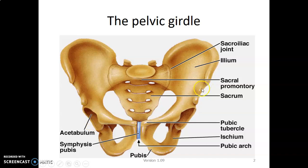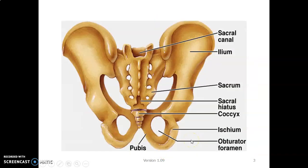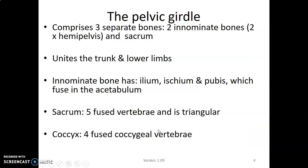Key landmarks include the anterior superior iliac spine, anterior inferior iliac spine, the superior pubic ramus with the pubic tubercle, the pubic symphysis, and the inferior pubic ramus. Posteriorly is the ischium and the sacrum, including the sacral hiatus, sacral foramina, and the sacral canal where parts of the spinal nerves pass. The pubis and the obturator foramen are also visible.